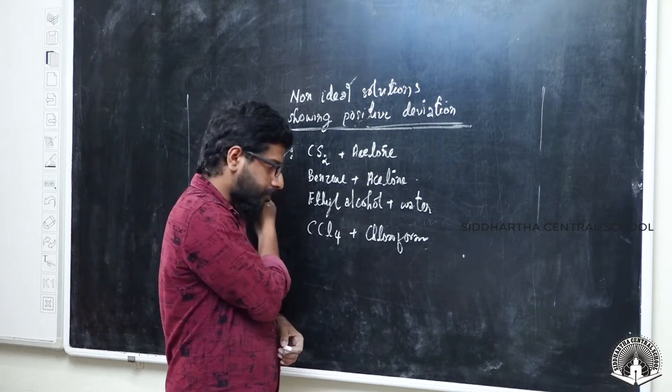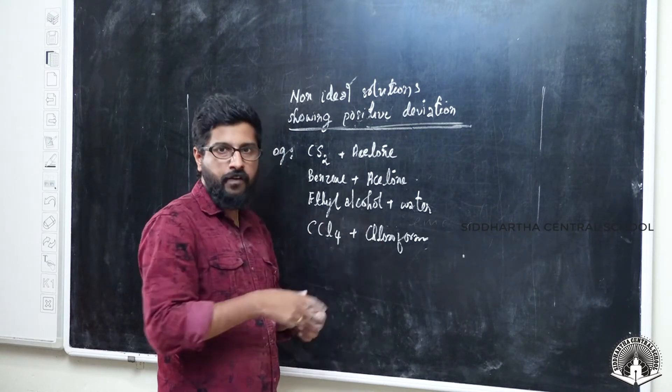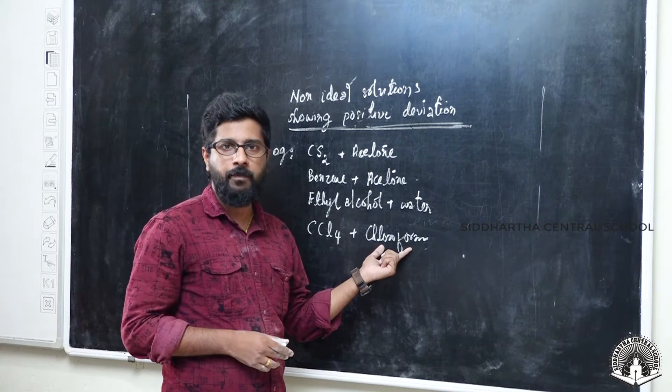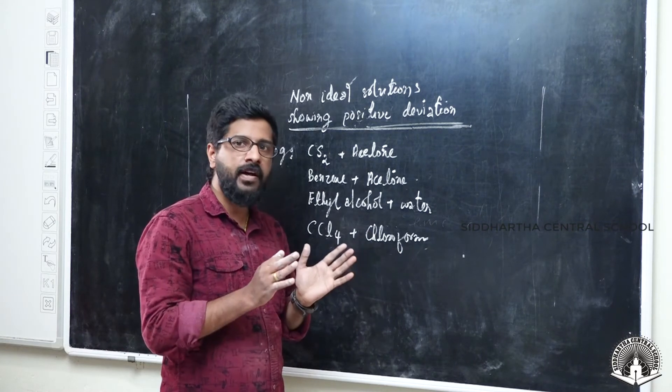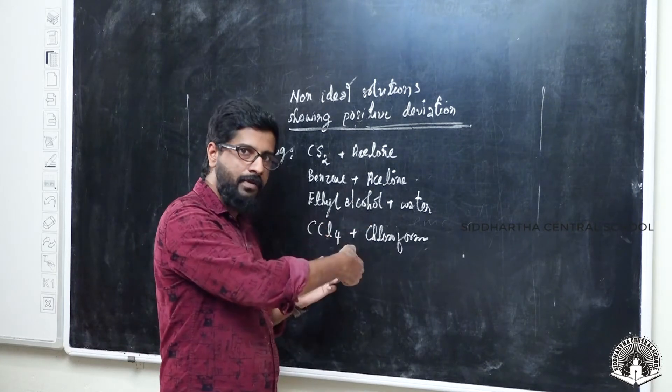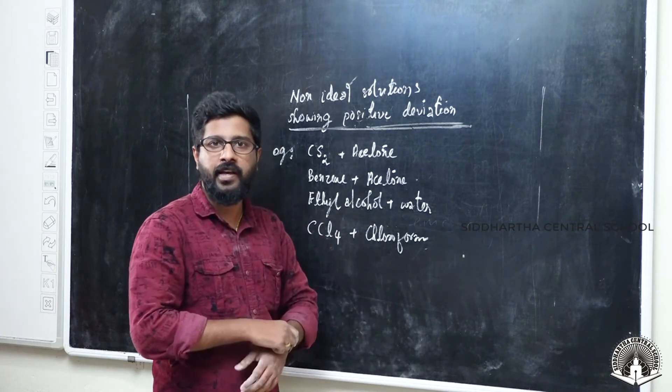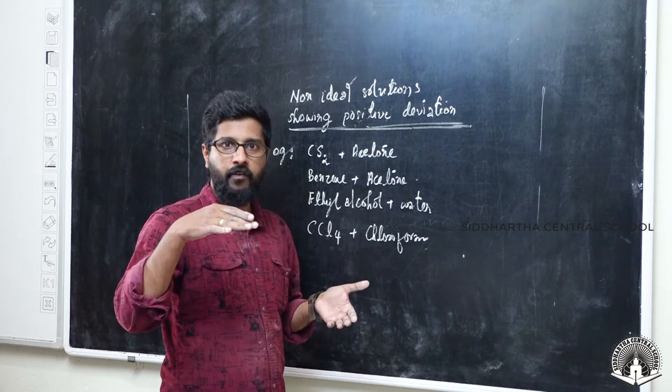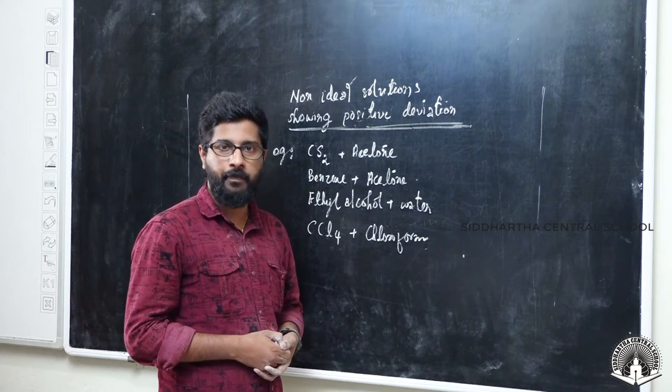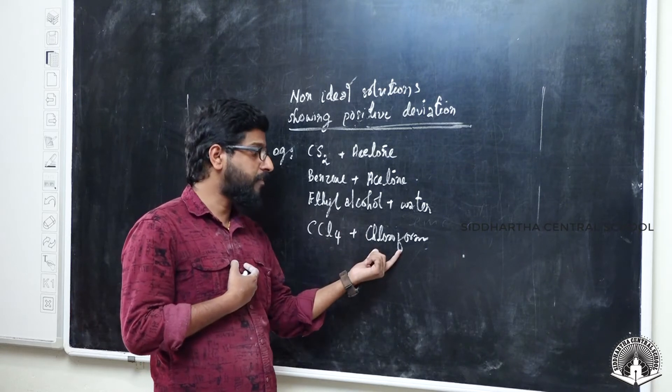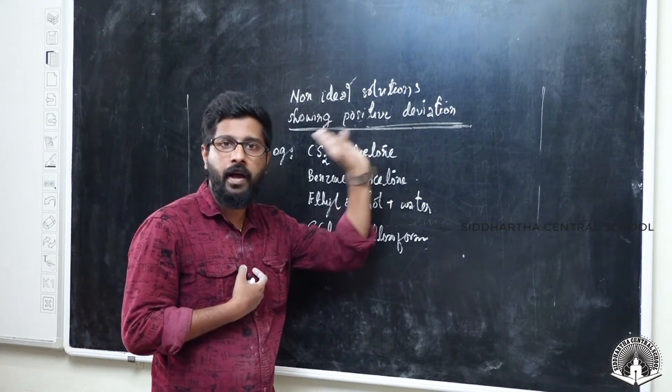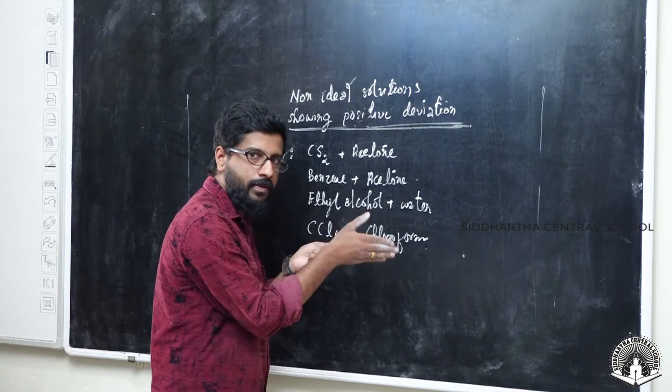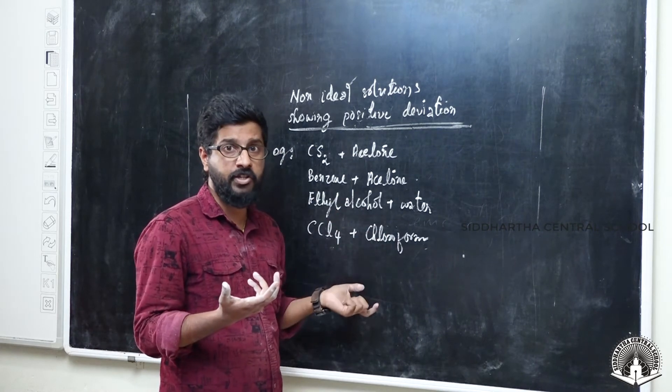In an experiment, carbon tetrachloride is mixed with chloroform. What are the observations made after the experiment? When you have the mixture, you can see practical observations - cold sensation, hot sensation, volume expansion, decrease or increase. First, we want to know that CCL4 chloroform mixture shows positive deviation. When you mix them, what sensation do we obtain? Cooling sensation.